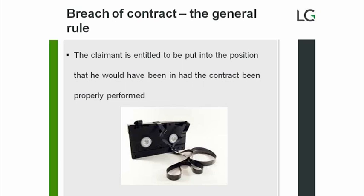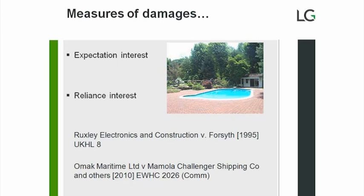There are three distinct measures a claimant may rely on to measure damage. The first is the claimant's expectation interest — looking forward and reflecting the financial gain or benefit the claimant would expect to receive had the contract been properly performed. Typically in a commercial contract this would be a loss of anticipated profit. A claimant's expectation can be quantified by reference to the cost of cure or by reference to diminution in value.